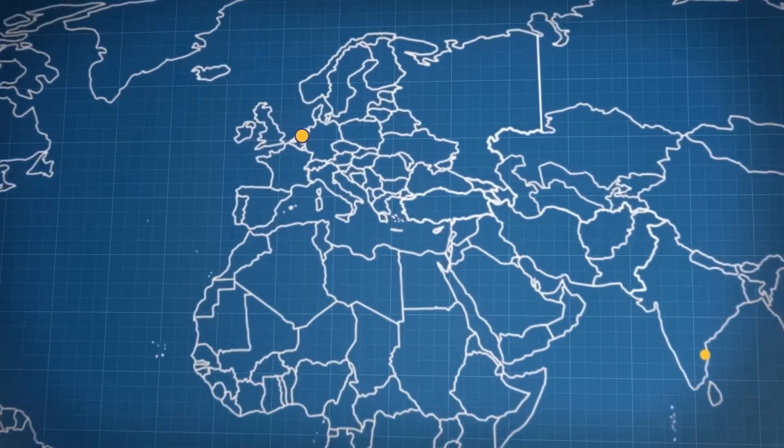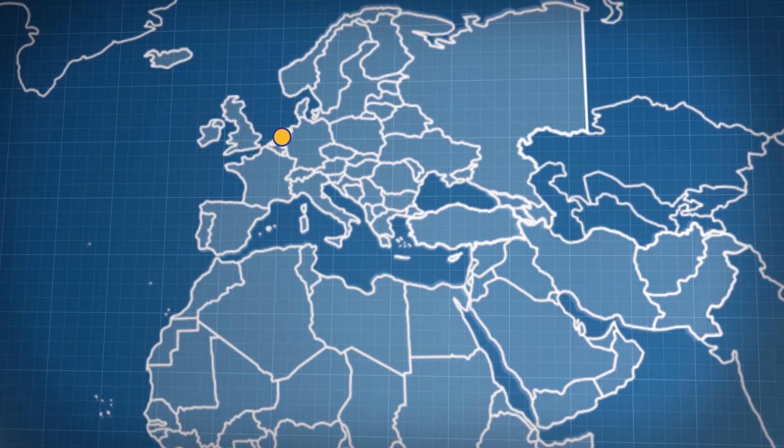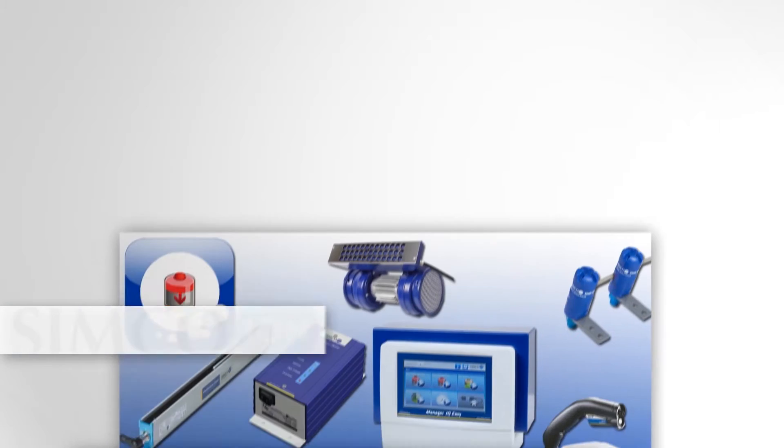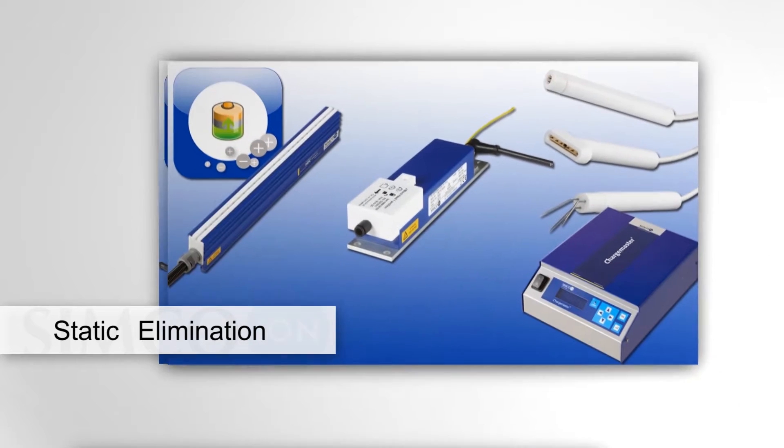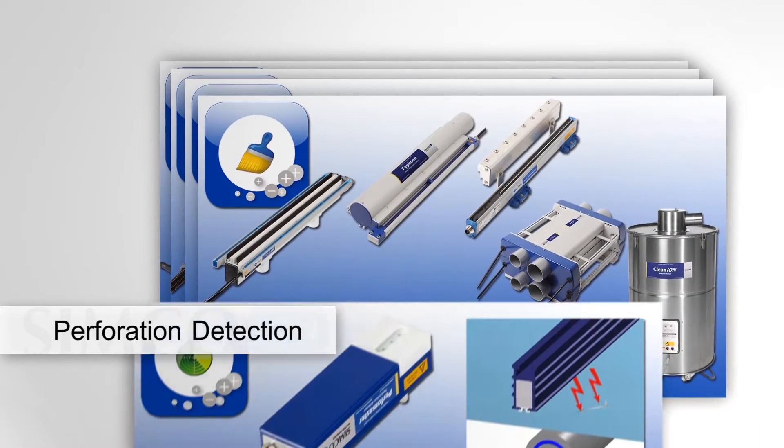Simcoe in Netherlands is responsible for the sales and after sales service in Europe, Africa and the Middle East. Our product range consists of five major categories: static elimination, static bonding, static measuring, surface cleaning and perforation detection.